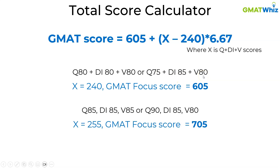Let's take another example: if x is 255 — which is 85, 85, 85 or any other combination — you will get a GMAT Focus score of 705. Simply use this formula and you will get the outcome. Remember, GMAT Focus scores end in 5, so you have to round the outcome to the nearest 5 to get an approximate idea of the number.